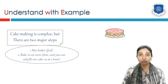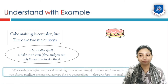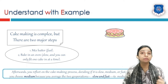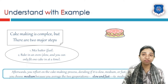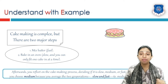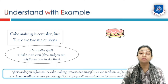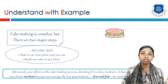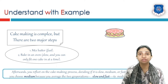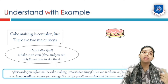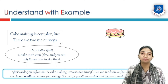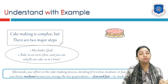So given this scenario of cake baking, what would you call the cake-making process as a whole? Is it a fast process or a slow process? The cake-making process is a medium process because one step is fast and the other is slow. Both of them average out to a medium process — neither too fast nor too slow.